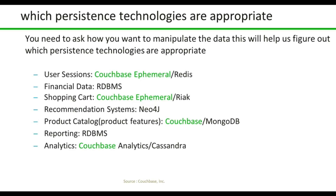If you want to give recommendations — for example, on an e-commerce website when you add a product to your cart, you can see recommendations like frequently bought together items or similar products. These recommendations can be served through a graph database like Neo4j. For a product catalog where you store product pictures, price, and description, Couchbase or MongoDB are good fits. For reporting you can opt for RDBMS databases; for analytics, Couchbase Analytics or Cassandra are a good fit.